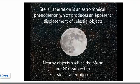Hi, my name is Bartel Pla. I would like to share my understanding of stellar aberration, which is an effect that produces the apparent displacement of celestial objects. Nearby objects, such as the Moon or objects on Earth, are not subject to stellar aberration.